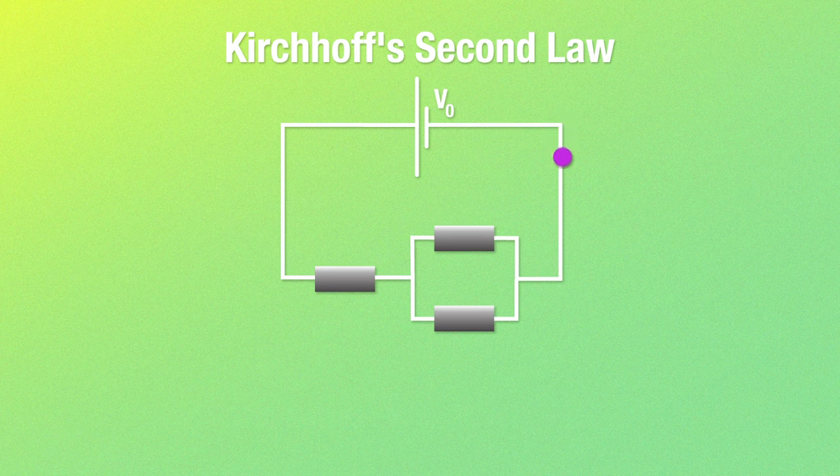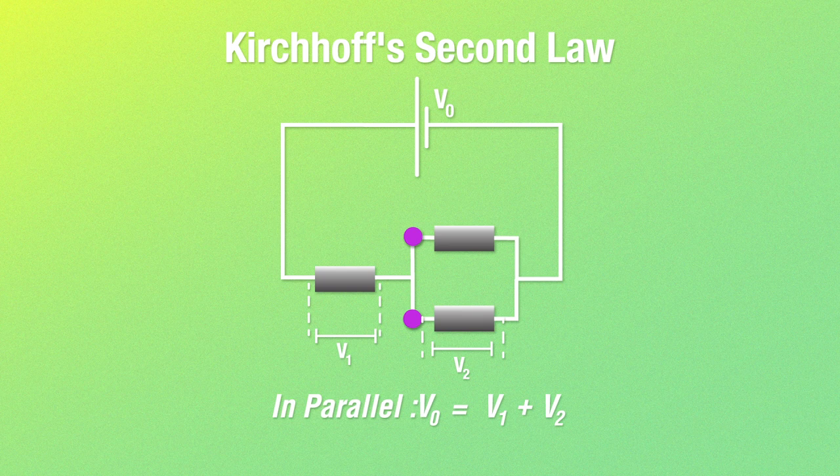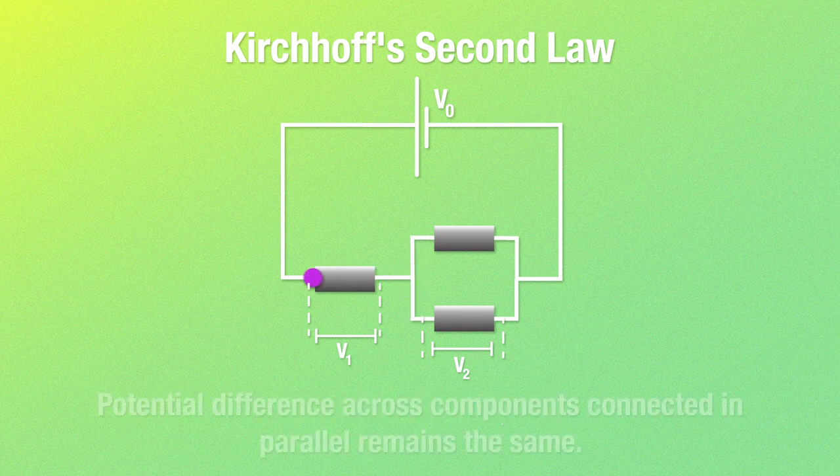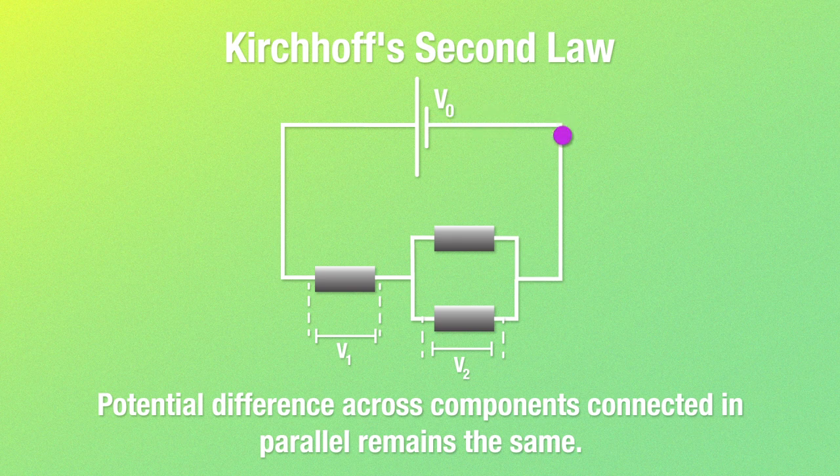Now let's say we change the circuit and add two of the components in parallel instead. What happens now is that the potential drop across both components will be the same. Think of the two resistors in parallel acting as one. This is because charge carriers can only pass through one of the two components, right? So regardless of which resistor they pass through, the charge carriers will still deliver the same amount of energy.